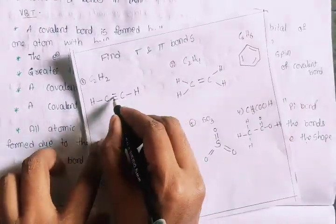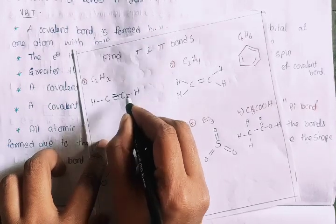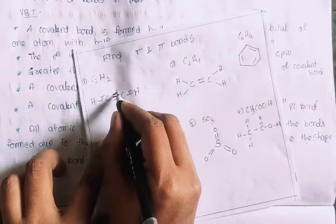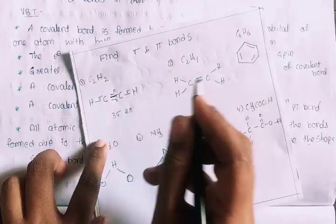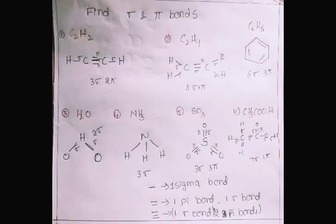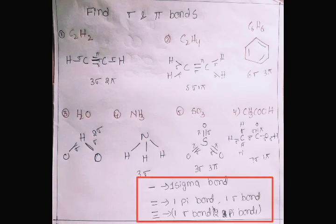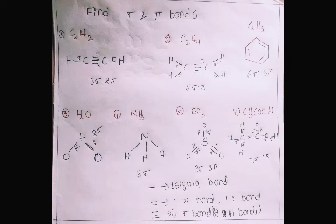Two atoms, three lines: one sigma bond and then two pi bonds. So find sigma and pi bonds in the following given examples.